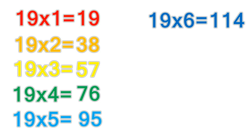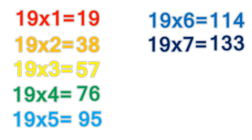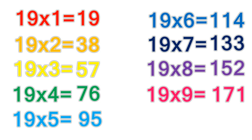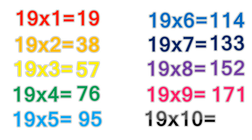19 times 7 equals 133. 19 times 8 equals 152. 19 times 9 equals 171. 19 times 10 equals 190.